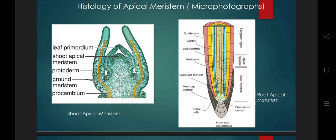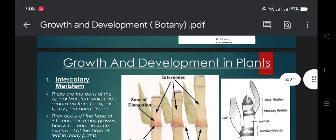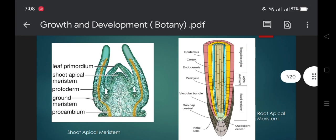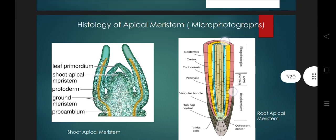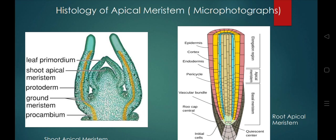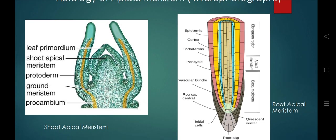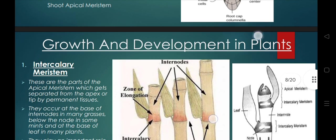If you talk about the root, there will be a root cap on the tip, and after the root cap the cells will be the apical meristem. As compared to apical meristem cells, basal cells are enlarged in size. The first layer is the epidermis, after that cortical cells or cortex, then endodermis. The endodermis is surrounded by pericycle, and inside the pericycle are vascular bundles — that is xylem and phloem.